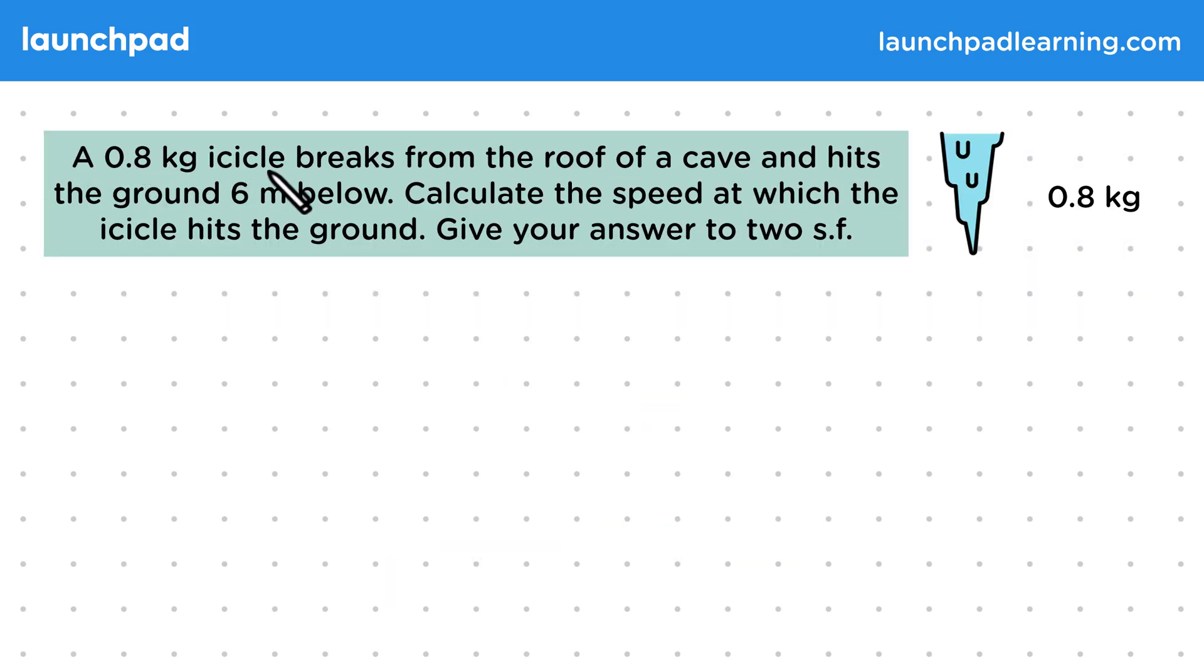A 0.8 kg icicle breaks from the roof of a cave and hits the ground 6 metres below. Calculate the speed at which the icicle hits the ground. Give your answer to two significant figures.